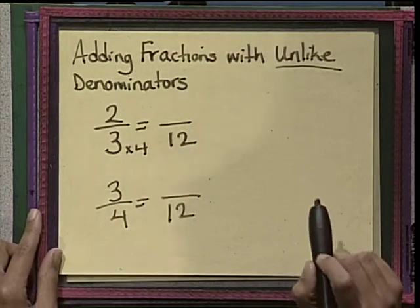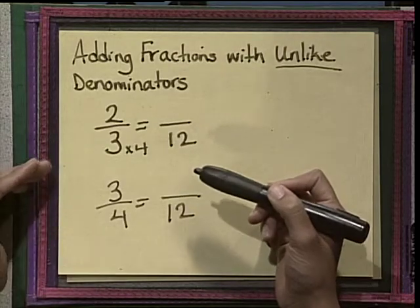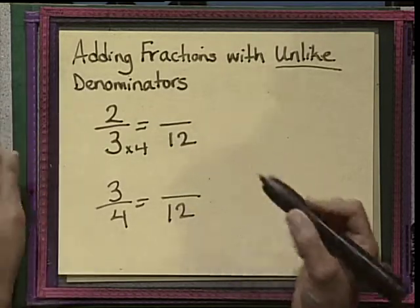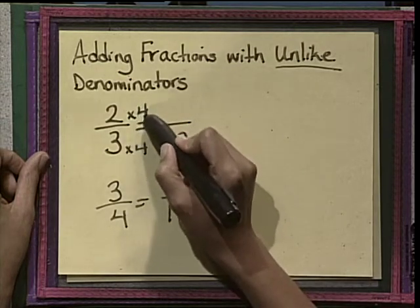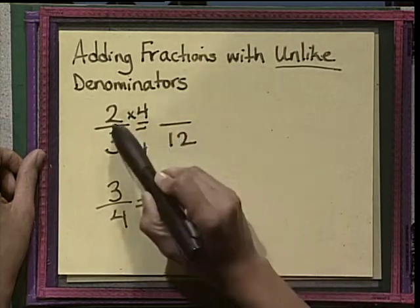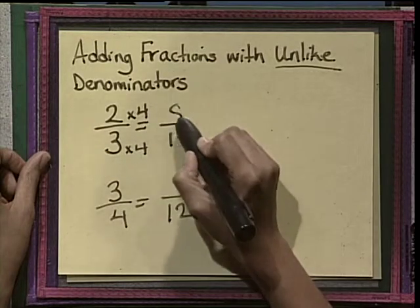The rule with fractions is whatever you do to the bottom number, which is the denominator, you also must do the same thing to the top, which is the numerator. So now we are going to multiply the numerator by 4 as well. 2 times 4 equals 8.